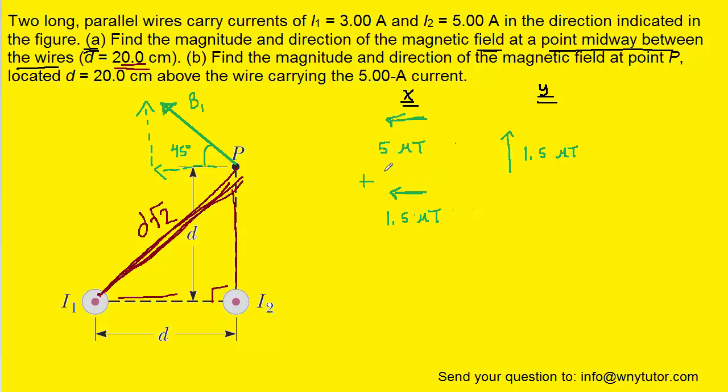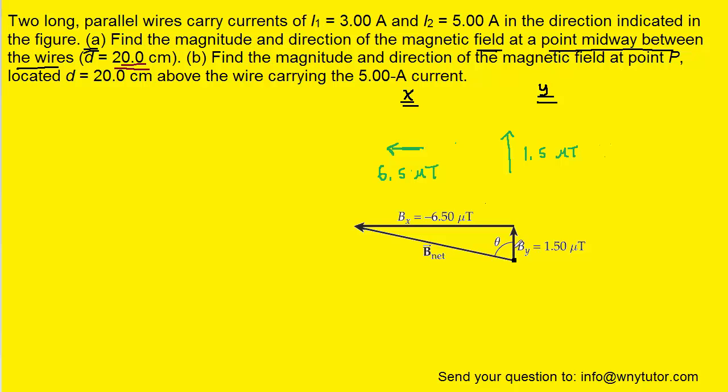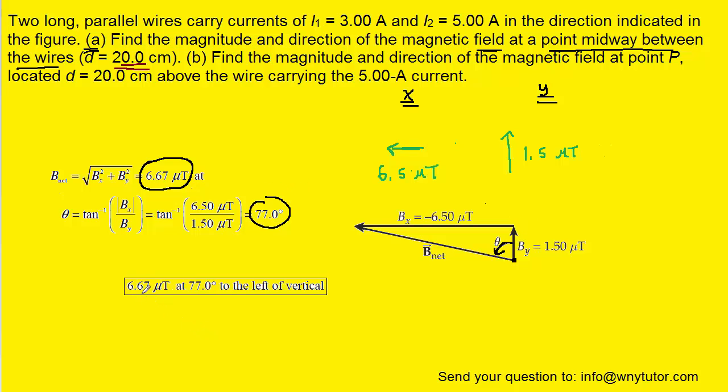Both X components point to the left, so we can add them together to make 6.5 microtesla. Now we can take the X and Y components of the resulting magnetic field and construct a right triangle. The total Y component of 1.5 microtesla points up. The total X component points to the left and is 6.5 microtesla. We find the resultant using Pythagorean theorem and the angle using inverse tangent. 6.67 microtesla becomes the total resultant magnetic field at point P, and the angle is 77 degrees. We can express the final answer as 6.67 microtesla at 77 degrees to the left of the vertical.